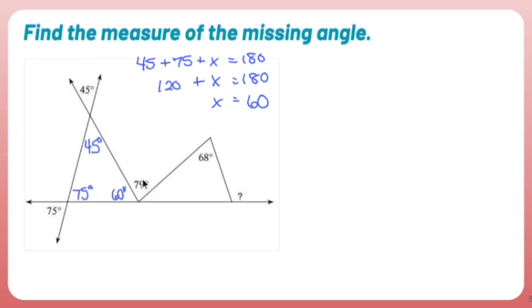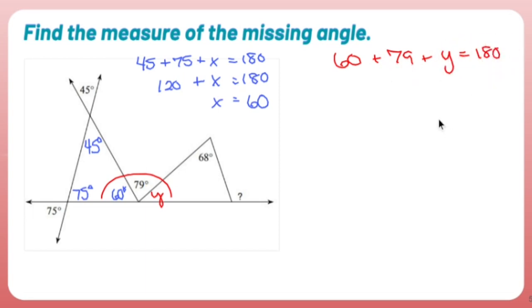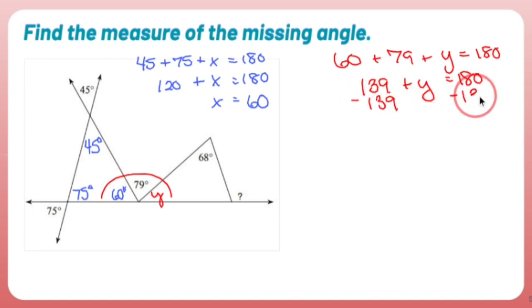That's 79. It's not attached to a triangle, but 60 and 79 and Y are all glued together to create a straight line: 60 plus 79 plus Y equals 180 degrees. 60 plus 79 is 139, so 139 plus Y equals 180. Subtract 139 from both sides and Y equals 41 degrees.